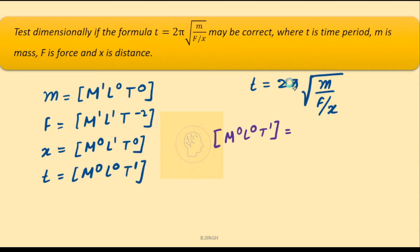So on the right hand side, since 2π doesn't have dimensions, let's figure out the dimensions which are present inside this root. So root under m, m is m1, l0, t0 whole divided by force. Force is m1, l1, t minus 2 whole divided by the dimensions of x which is l1 because m0 and t0.